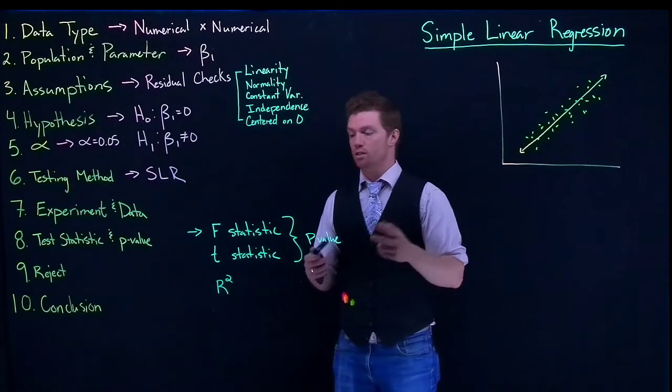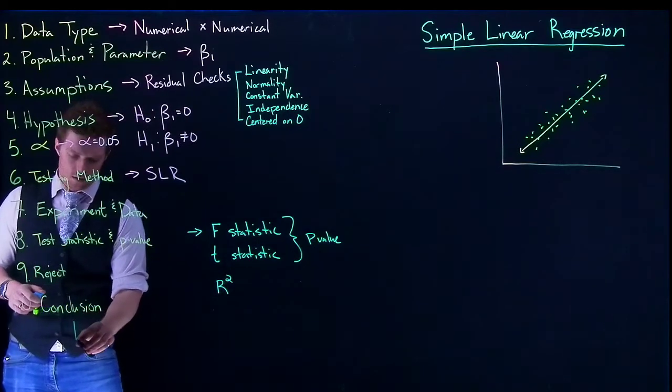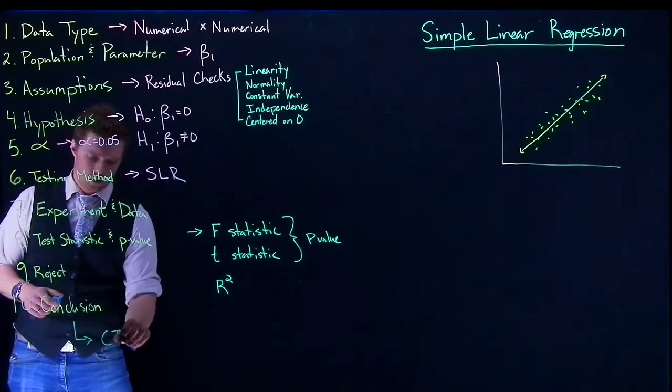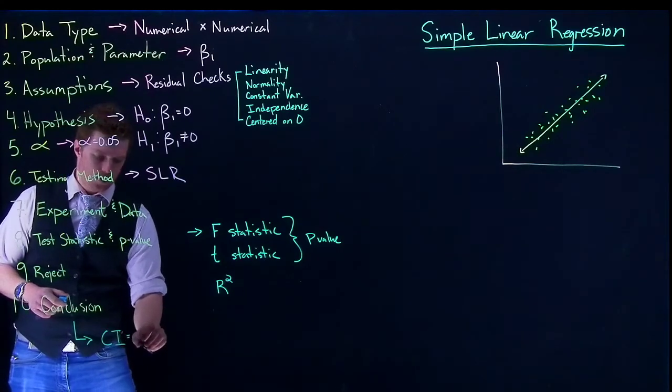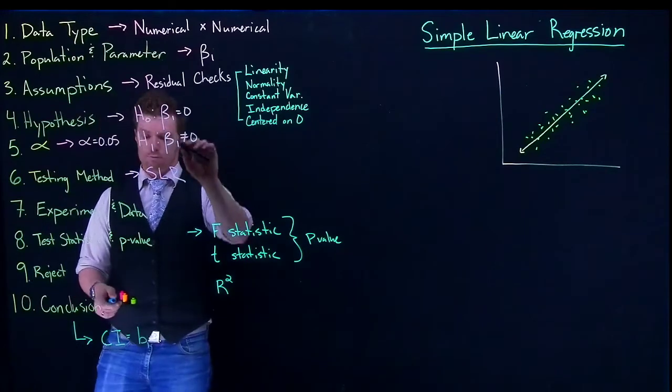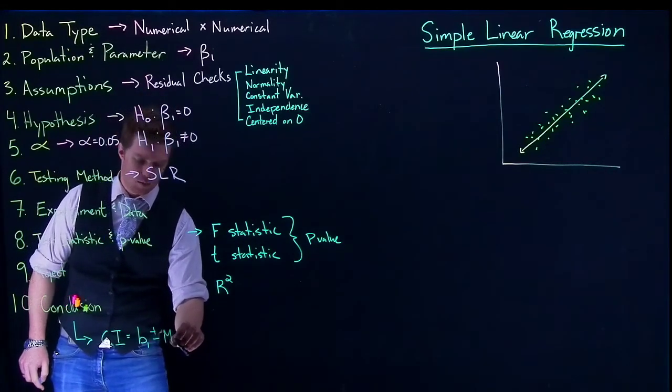So we can include that in our confidence interval part. And if we do reject the null hypothesis, and we need a confidence interval, our confidence interval is going to be our b1, which is our estimation of beta 1, plus or minus some margin of error.